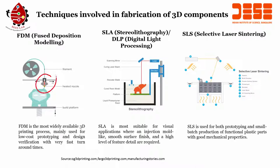The heated nozzle will move in X and Y directions, and through the filament, the material is fed to the heated nozzle, and then it will be printed on the building platform. Whenever you require a certain height, the building platform can move in the Z direction. FDM, which is fused deposition modeling, is the most widely available 3D printing process, mainly used for low cost prototyping and design verification with very fast turnaround times. We will see an FDM-based 3D printing process as part of your experiment class, where you will learn how you can print a block, even from a remote place.